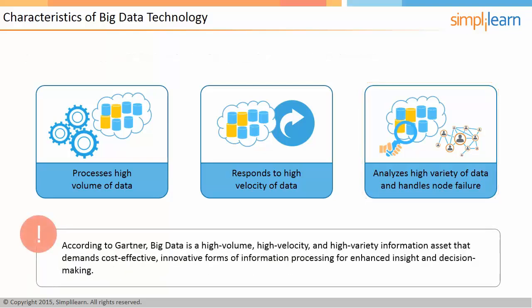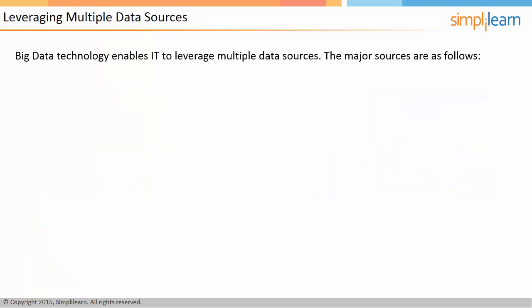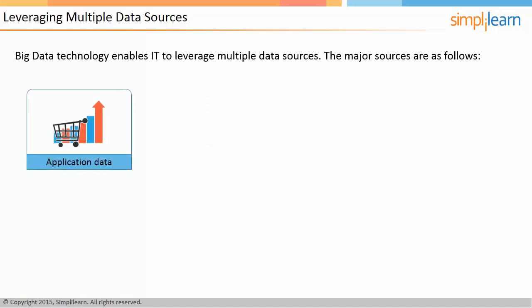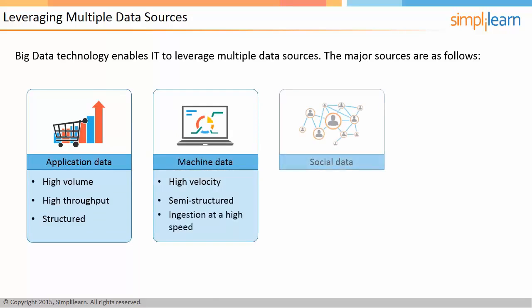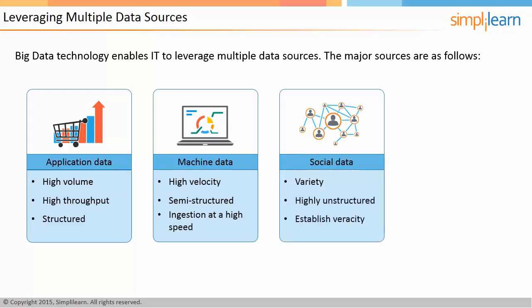According to Gartner, big data is a high-volume, high-velocity, and high-variety information asset that demands cost-effective, innovative forms of information processing for enhanced insight and decision-making. Big data technology enables IT to leverage multiple sources of data. Major sources include application data, which has high volume and throughput and is structured; machine data, which has high velocity, is semi-structured, and needs to be ingested at high speed; and social data, which has high variety, is unstructured, and requires establishing the veracity of the data.